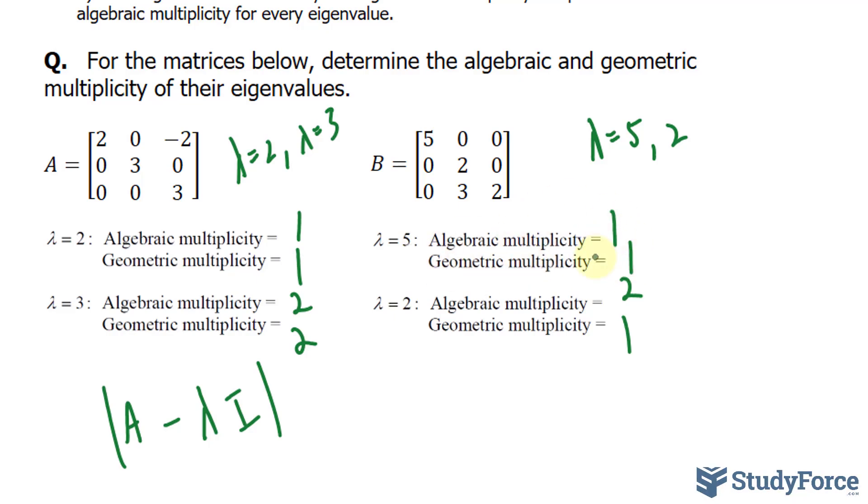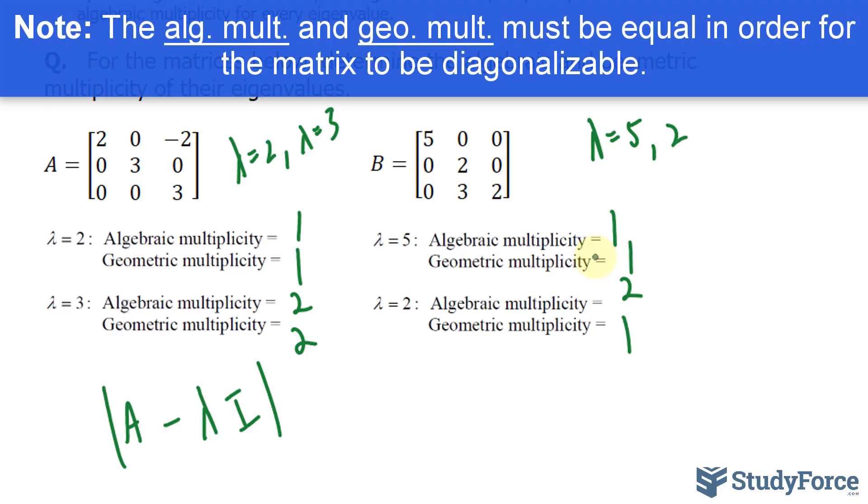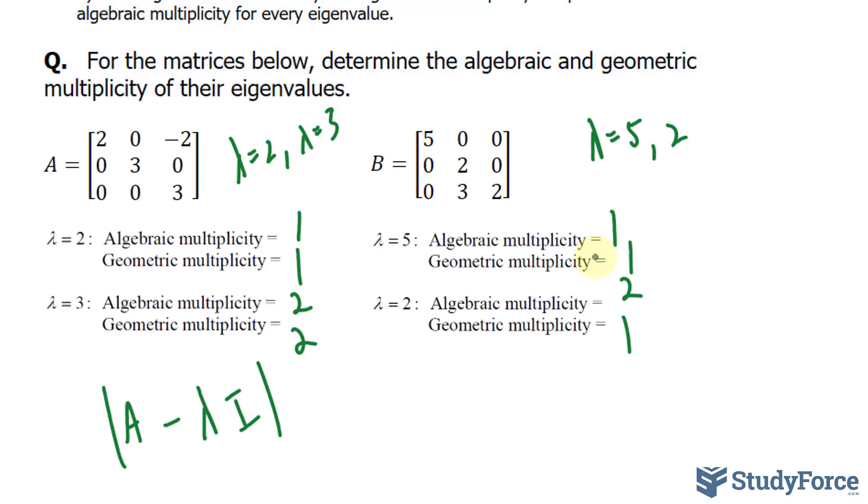This tells us right away if these matrices are diagonalizable. The algebraic multiplicity must equal to the geometric multiplicity for every eigenvalue. And that happens here. But for the other one, it doesn't happen. When the eigenvalue is 2, the algebraic multiplicity does not equal to the geometric one. So right away we know that B is not diagonalizable.